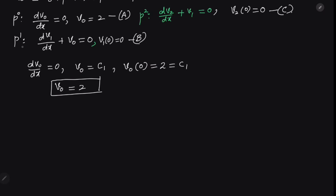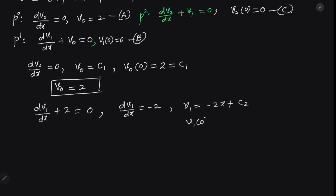Now solving equation B: dv1/dx + v0 = 0, and since v0 = 2, we have dv1/dx = -2. Integrating gives v1 = -2x + C2. Applying the initial condition v1(0) = 0, we find C2 = 0. So v1 = -2x.